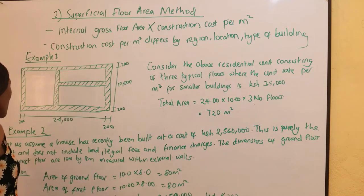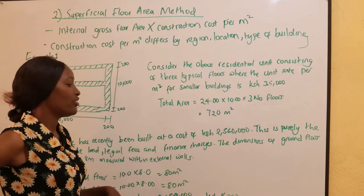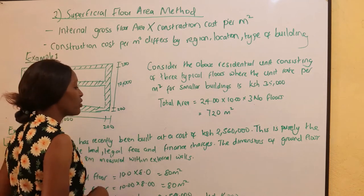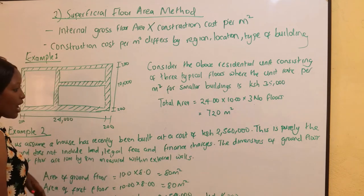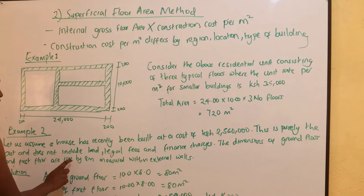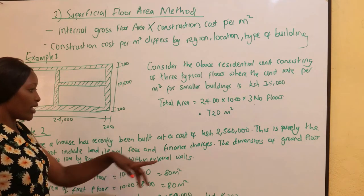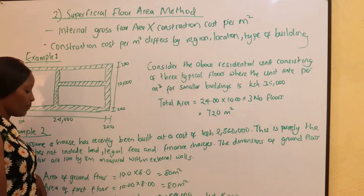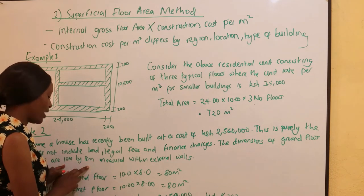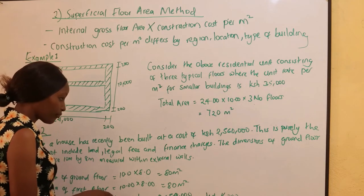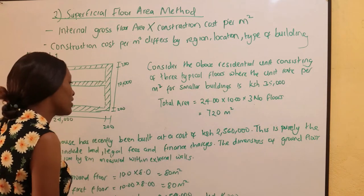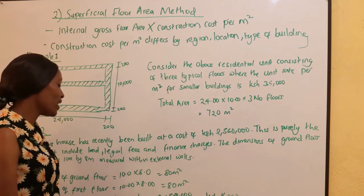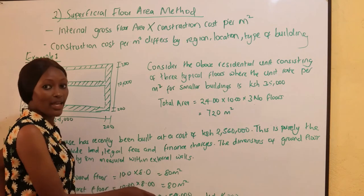The dimensions of the ground floor and first floor are 10 meters by 8 meters, measured within the external walls. Since land, legal, and finance charges do not relate directly to the building, we use only the 2,560,000. The area of the ground floor is 10 × 8 = 80 meters squared, and the first floor is also 80 meters squared, giving a total area of 160 meters squared. The cost per meter squared is therefore 2,560,000 divided by 160 meters squared.